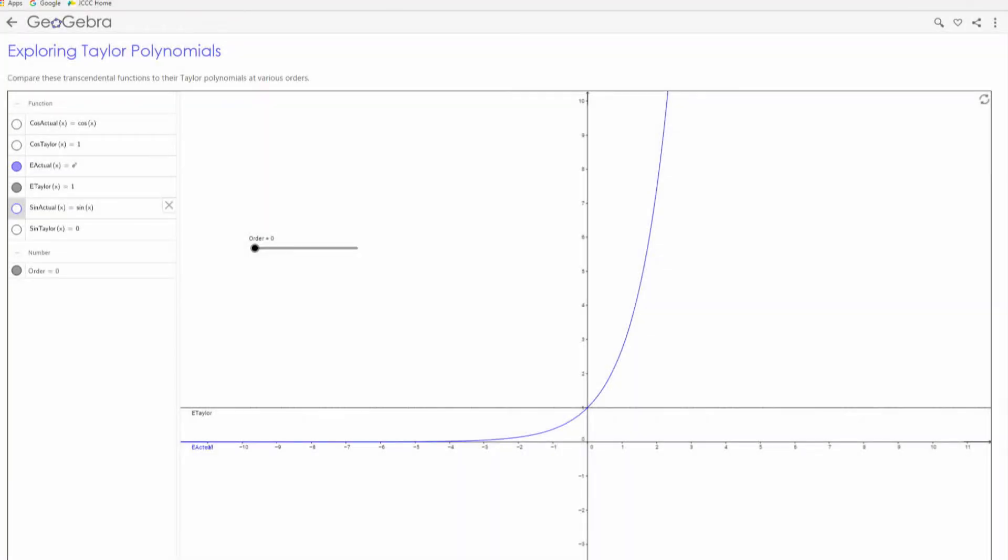Okay. So what we see here is the blue curve is e to the x and that black line is its current Taylor polynomial. And we're able to control what order Taylor polynomial we're looking at with this slider. In this demonstration, I'll have a link for so you can play around with this as well. So right now it's set at the zero order Taylor polynomial which we saw just a moment ago is one.